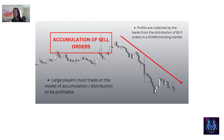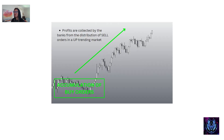More examples of how the banks do their trading. Large players must trade on a model of accumulation and distribution to be profitable. They accumulate their orders, and then when price goes down, the profits are collected by the banks from the distribution of buy orders in a down-trending market. On the other hand, the banks accumulate their buy orders in these contraction phases. When price moves into the trending phase, profits are collected by the banks from the distribution of sell orders in an uptrending market.